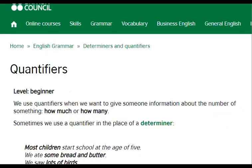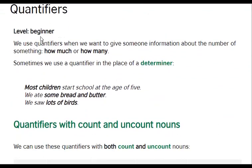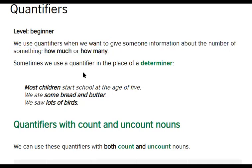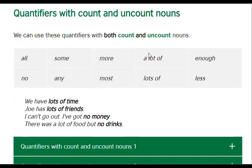Finally, we come to quantifiers. Quantifiers are used to give information about the number of something — how much or how many. Sometimes we use a quantifier in place of a determiner. 'Most children start school at the age of five.' 'We ate some bread and butter.' 'We saw lots of birds.' Quantifiers with count and uncount nouns: ten of these quantifiers can be used with both countable and uncountable nouns. Countable nouns are ones we can count; uncountable ones are those we cannot count. 'We have lots of time. Joey has lots of friends.' Time cannot be counted; friends can be counted.